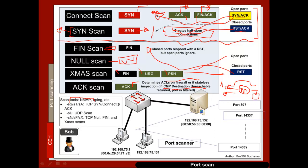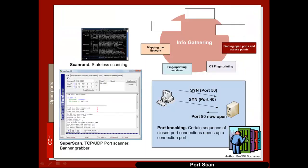In Nmap, -sS gives a SYN scan, -sT gives a connect scan, -sA gives an ACK scan, and -sU gives a UDP scan. We can also do Null, FIN and Christmas tree scans. The basic objective is to scan for a range of ports. Other tools include ScanRand, which is a stateless scanning tool, and SuperScan, which does port scanning and banner grabbing. There's also the concept of port knocking, where an agreed protocol of connections — such as connecting on port 50 followed by port 480 — will then open up a port, so only this agreed sequence will open it.